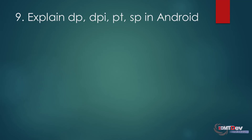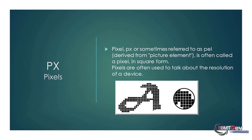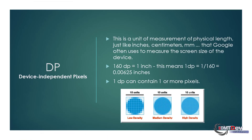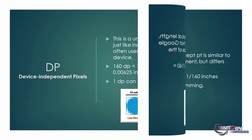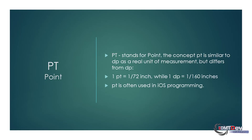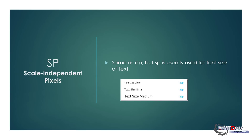Question: Explain DP, DPI, PT, and SP in Android. Pixel (PX), sometimes referred to as a picture element, is often used to talk about the resolution of a device. It is a unit of measurement of physical length, like inches, centimeters, or mm, that Google uses to measure the screen size of a device. SP is similar to DP but is usually used for the font size of text.